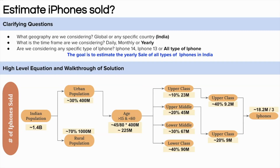We need to divide by 3 because the average lifetime of an iPhone is assumed to be 3 years. So 18 million ÷ 3 gives around 6 million iPhones being sold in India every year.